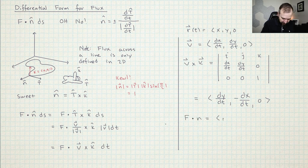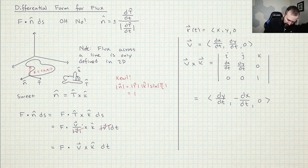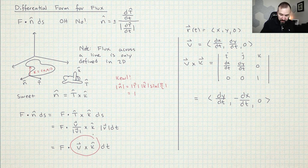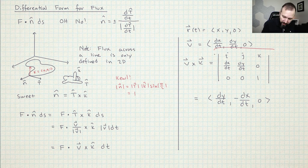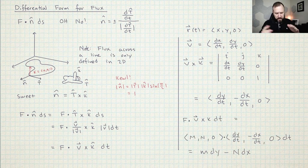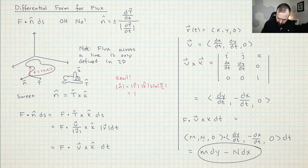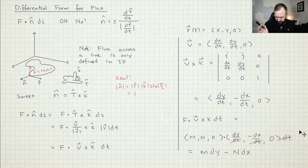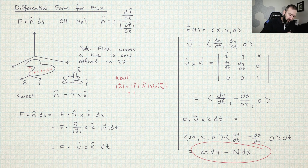There's a little canceling out, just like before. First I replace T with V over magnitude V, and then those magnitudes cancel. So what I need to do is V cross K. V is going to be (DX/DT, DY/DT, 0). Working out that cross product — don't forget it goes plus, minus, plus — so that's where the negative comes from. I've worked out V cross K. Now I just dot product that with F, and then the DTs all cancel. We end up with M DY minus N DX — that is the differential form for flux.